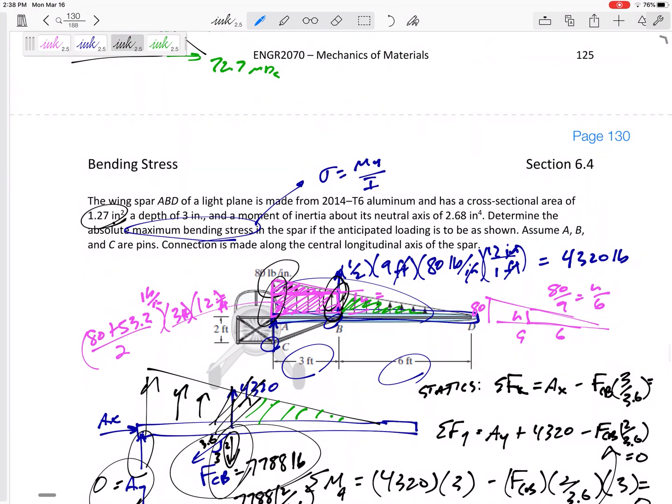They told us that the cross-sectional area, this is a rectangular cross-sectional area, the area is 1.27 inches squared, the depth is 3 inches, and so we've got to find the height.